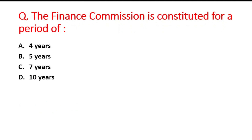Next question: The Finance Commission is constituted for a period of how many years? Option A is 4 years, B is 5 years, C is 7 years, and D is 10 years. The right answer is option B, that is 5 years.